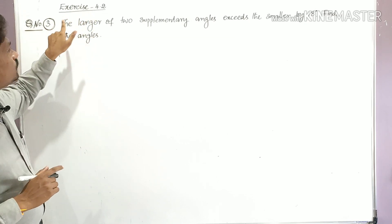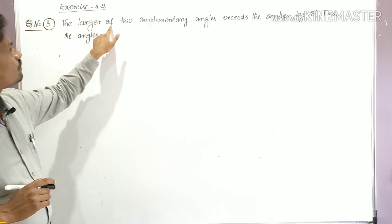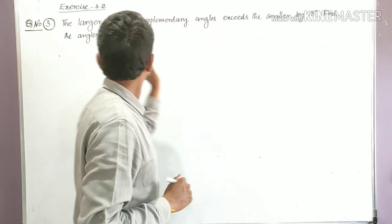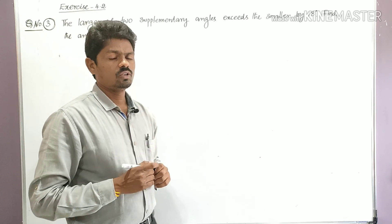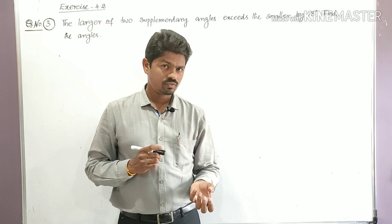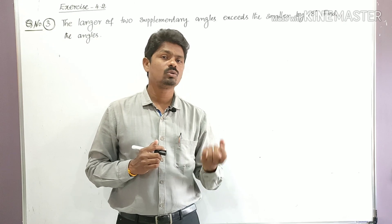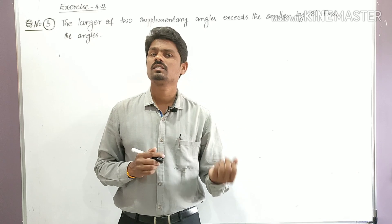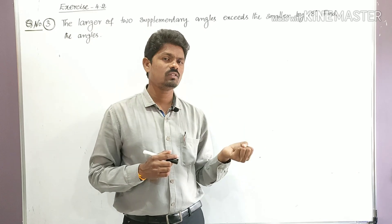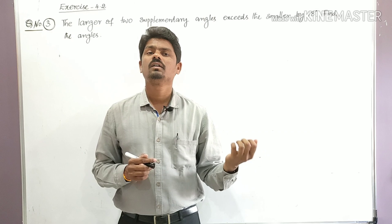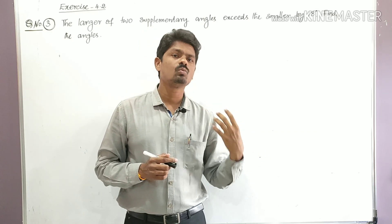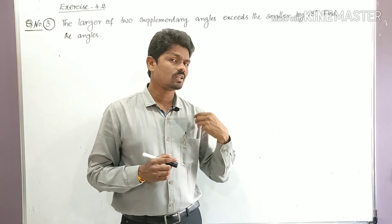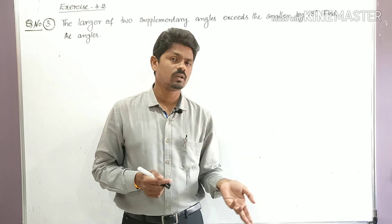This is Question Number 3 from Exercise 4.2. The problem states: 'The larger of two supplementary angles exceeds the smaller by 18 degrees. Find the angles.' Here we have to identify the unknown quantities — the two angles are unknown. The larger angle and smaller angle are what we need to find.